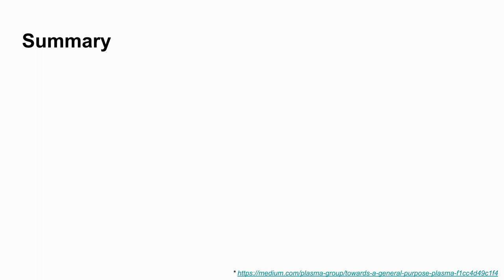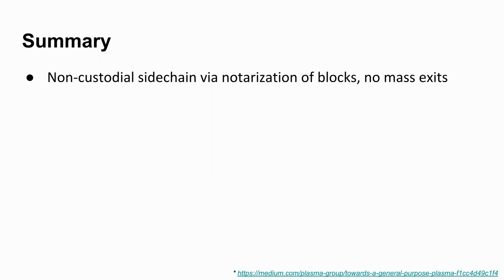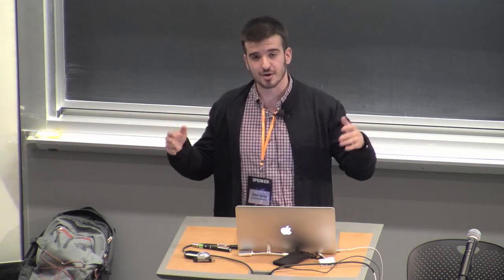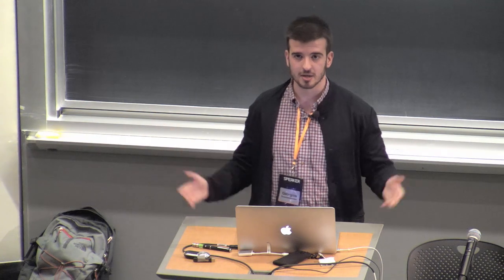A brief summary: we have a non-custodial sidechain via notarization of blocks — we can also call it a commit chain, where you take your blocks and commit them to the parent chain. There is interesting related work called NoCust by the group at Imperial College. This work has no mass exit vulnerability, which is a problem in Plasma MVP and more viable Plasma constructions where, if the untrusted operator messes with the Plasma chain state, everybody needs to rush to exit. If too many people need to exit, you have a traffic jam, people cannot exit in time, somebody loses their money, and the security properties break.